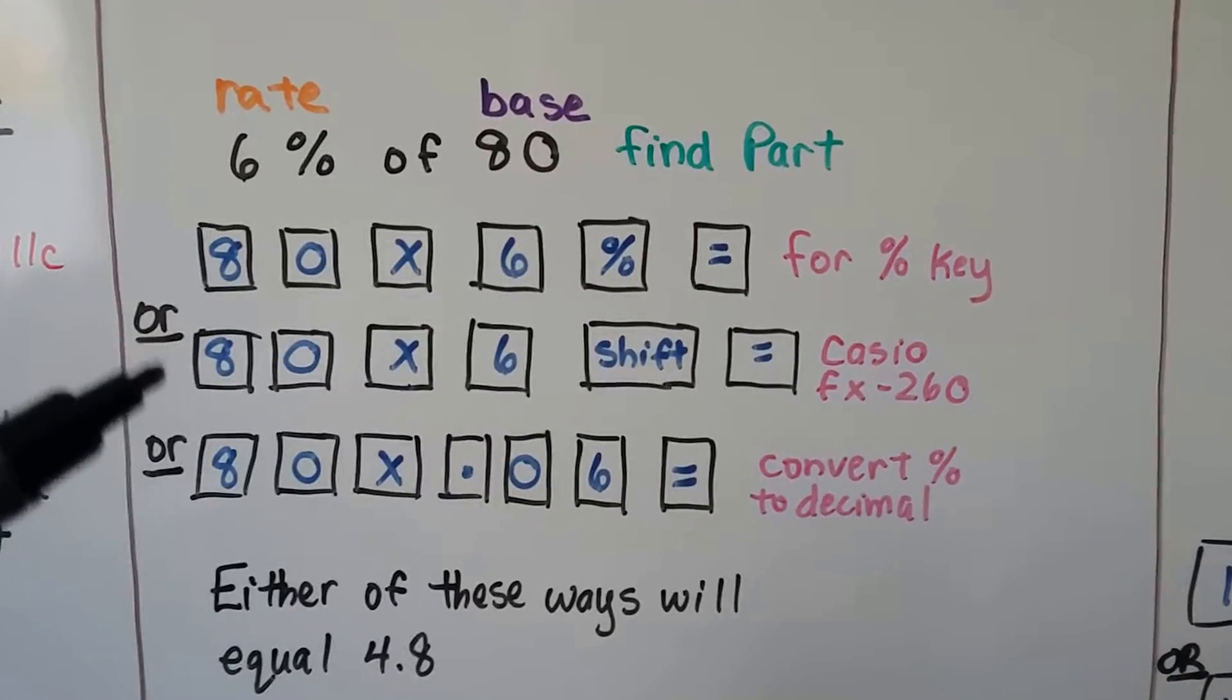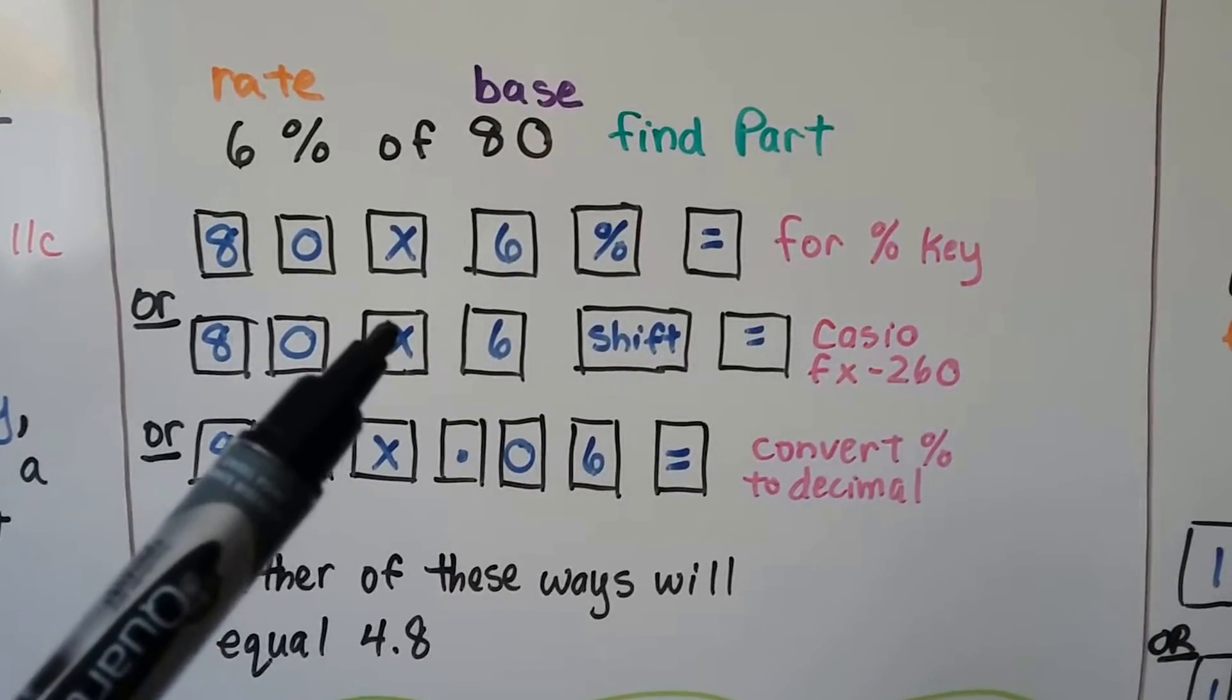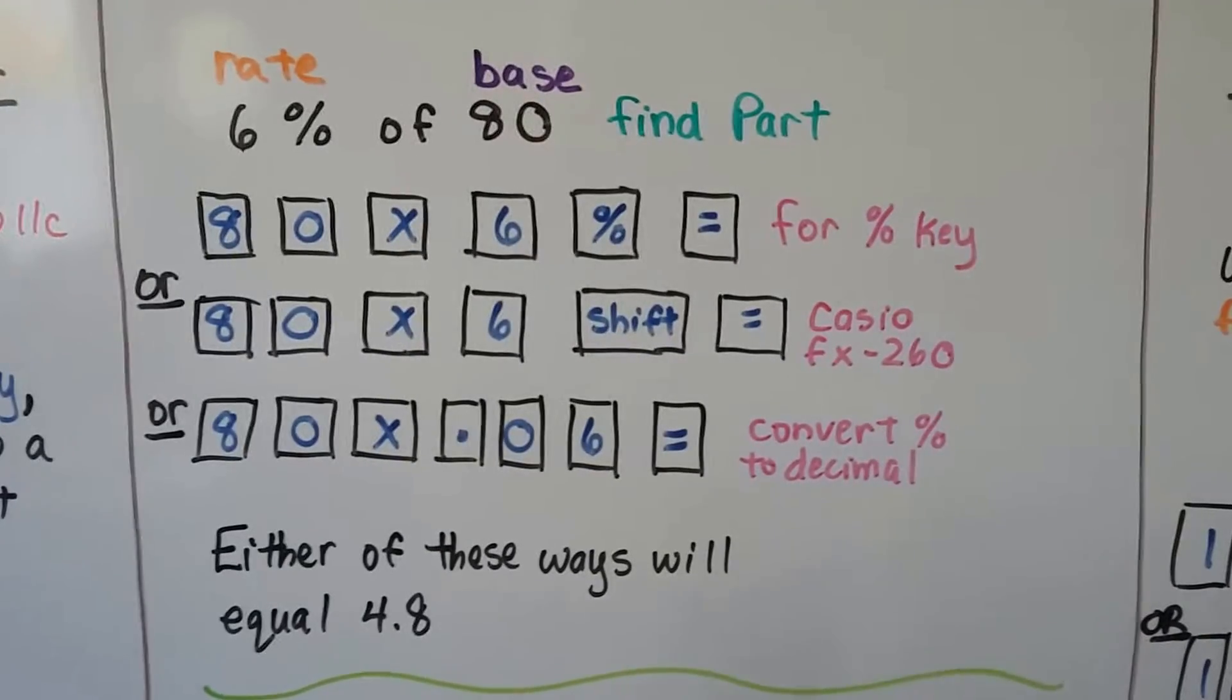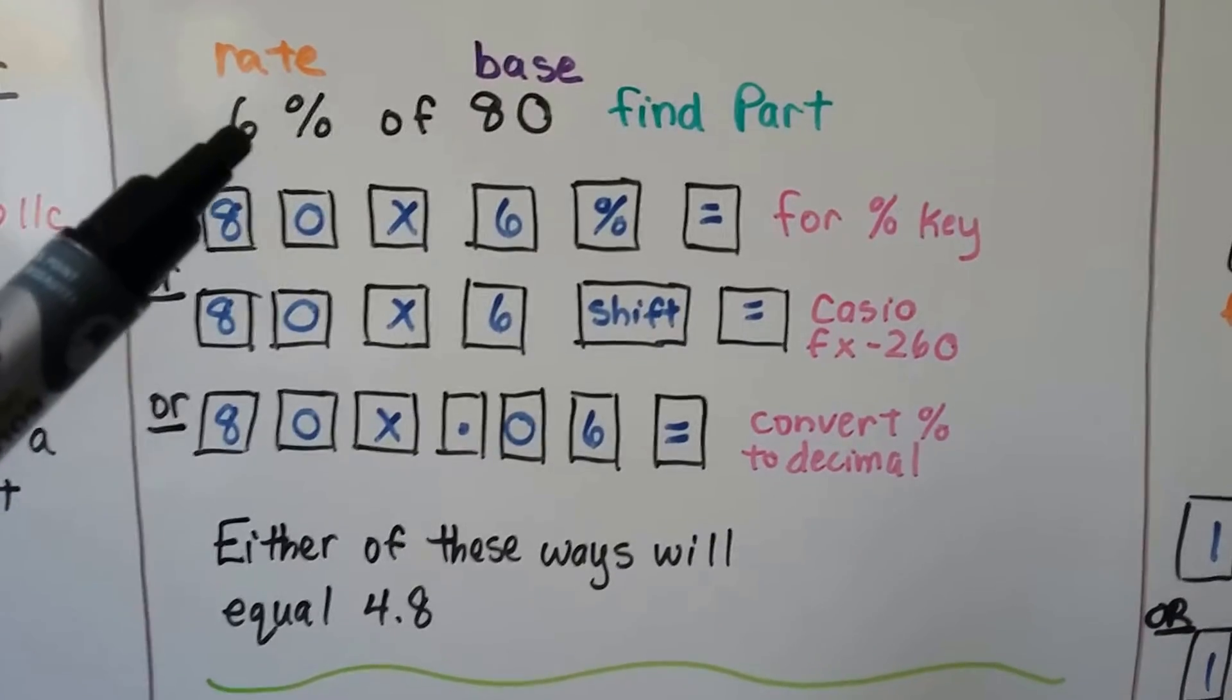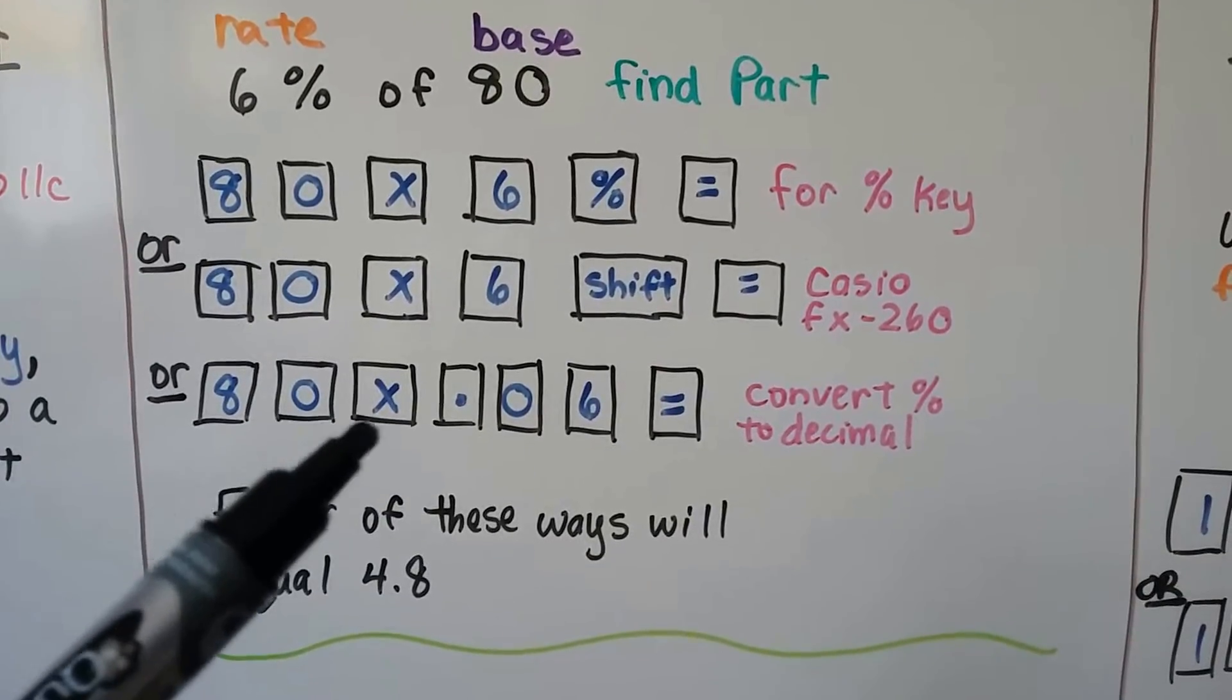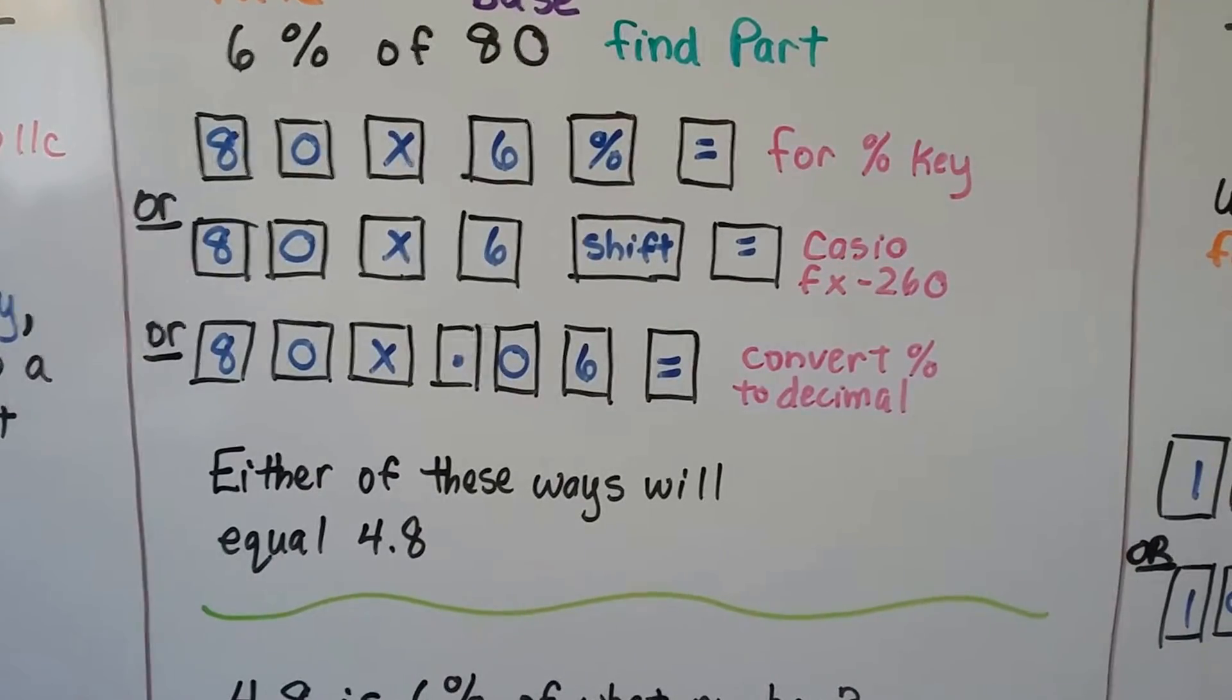If we're using the Casio FX260 that they usually lend for the GED, you're going to put in 8, 0, multiplication, 6, shift, equals. You can also avoid all the confusion because this works on every calculator. You change this to a decimal by turning it into a .06, and we multiply 8, 0, multiplication key, .06 equals, and that will give you 4.8.